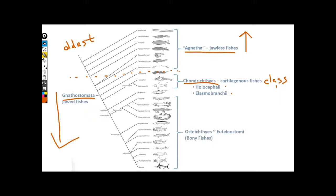Now we're ready to look at our second class, which is much bigger. Chondrichthyes was the smallest of all of our classes, at about 900 species. Osteichthyes is one of the largest, at about 25,000 and growing species.